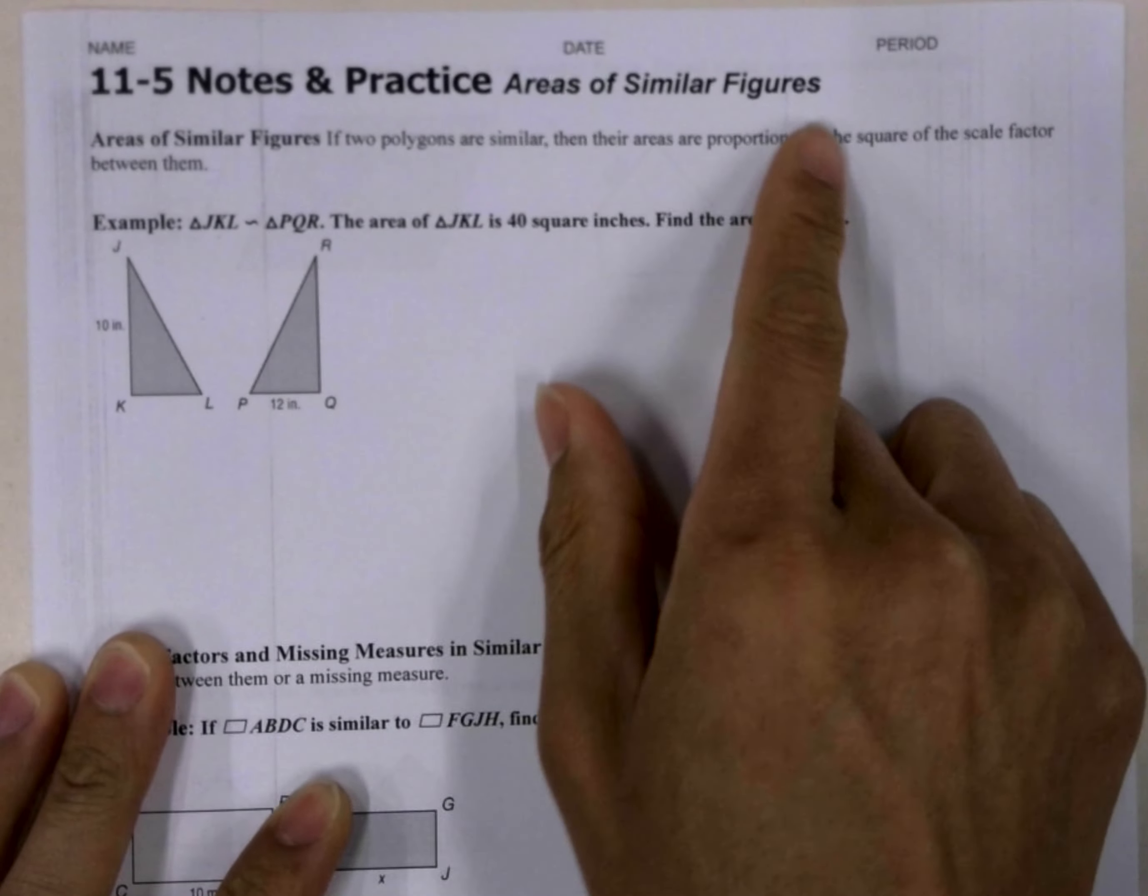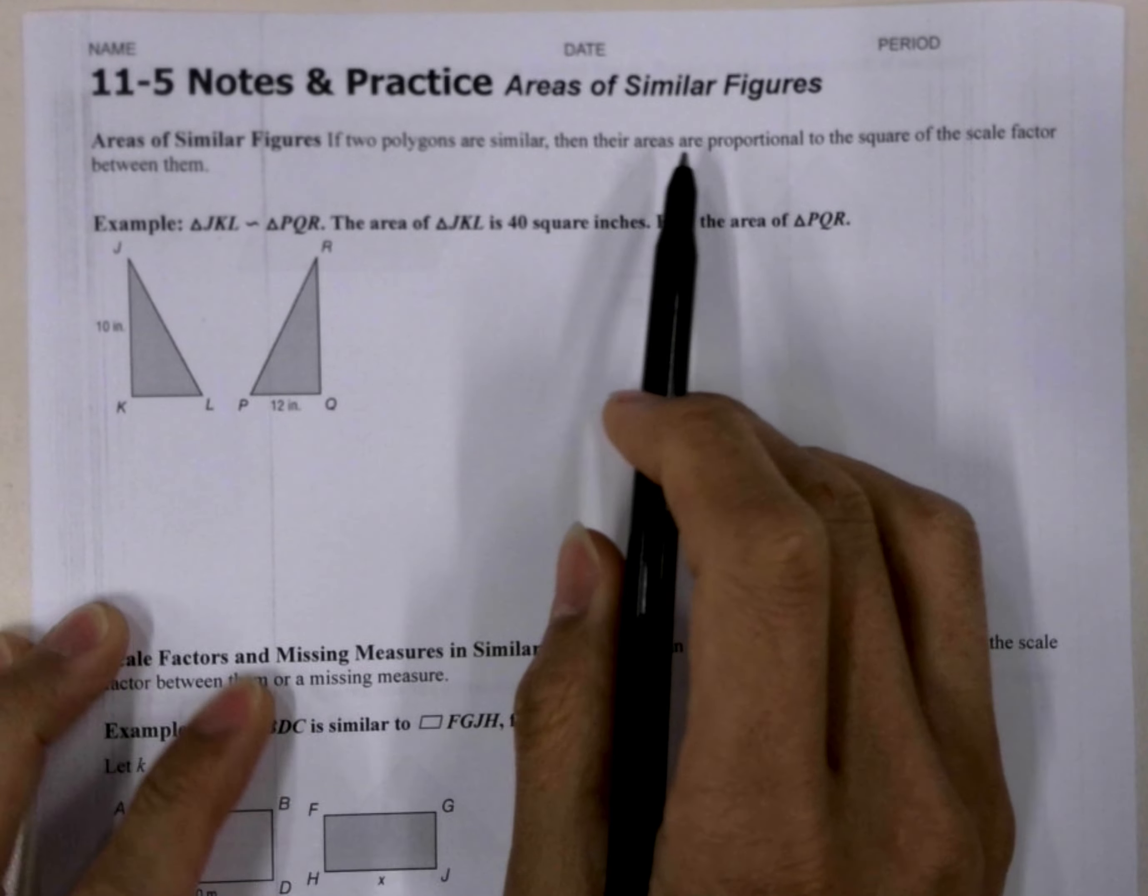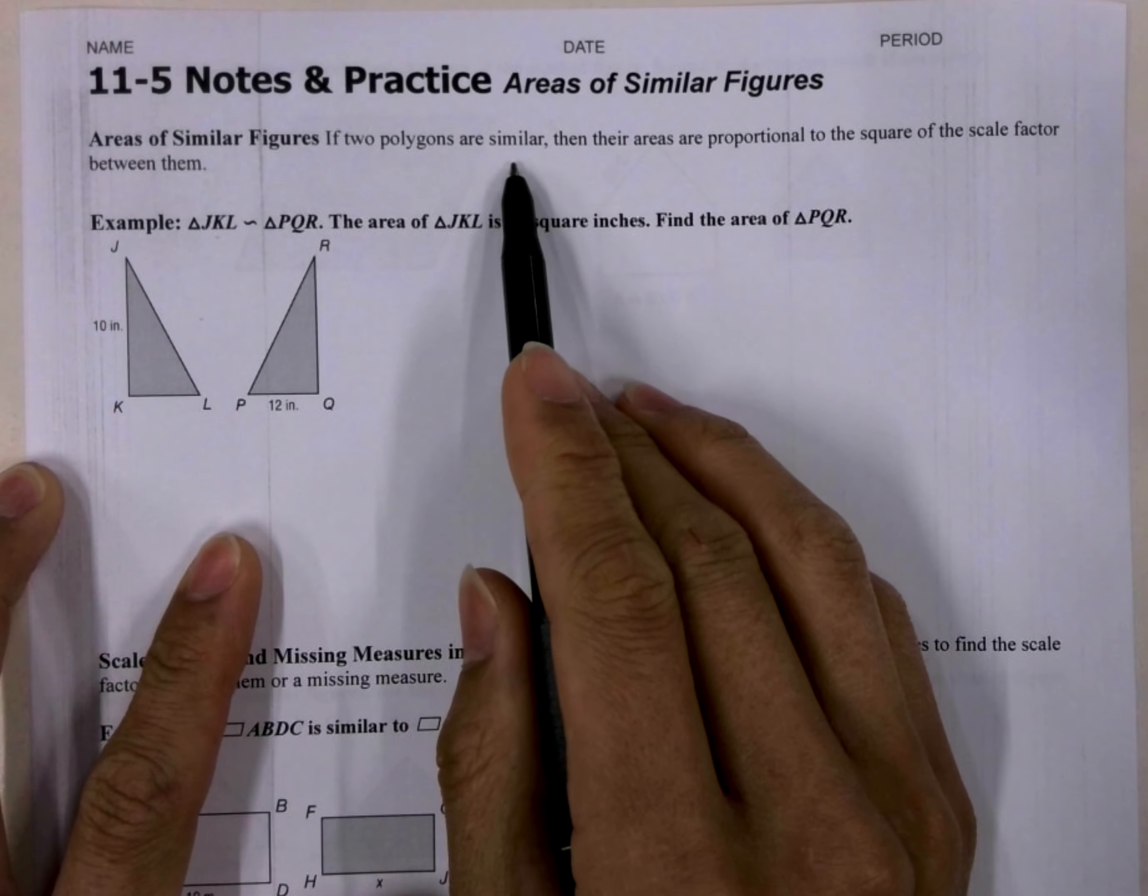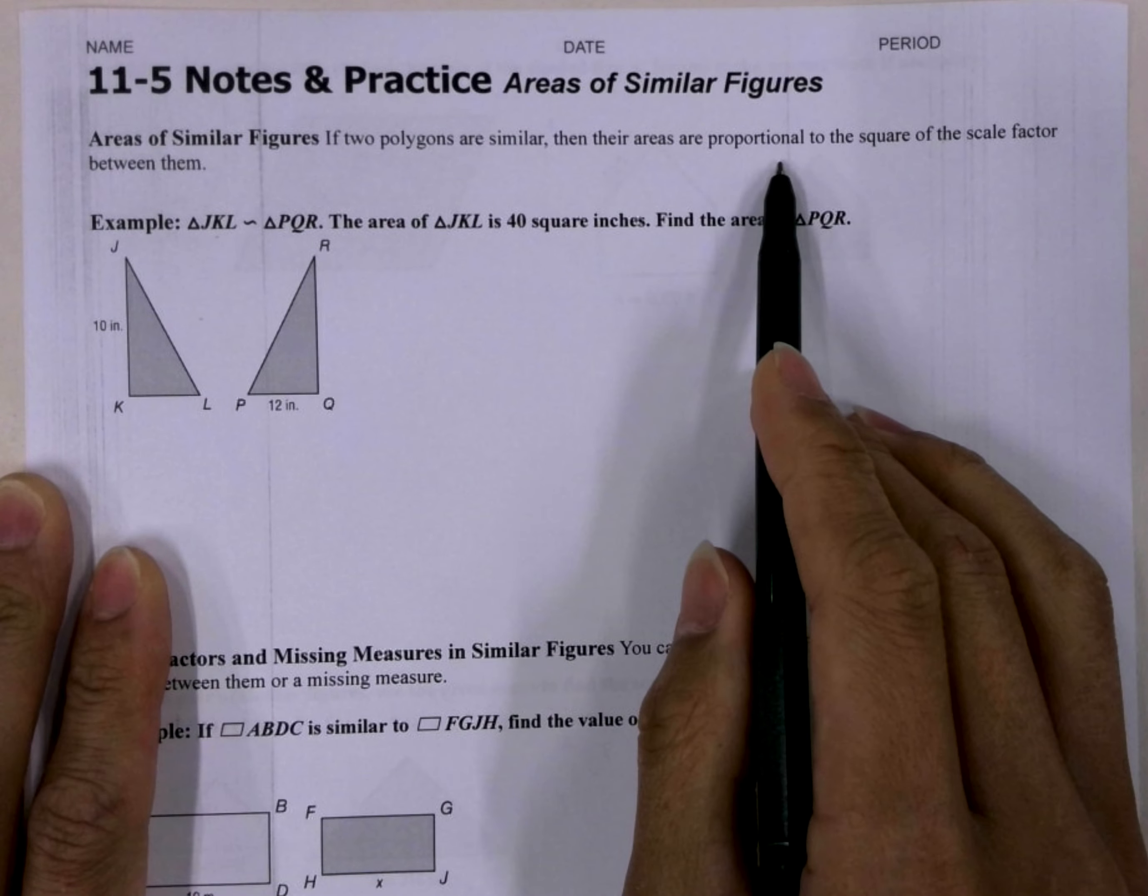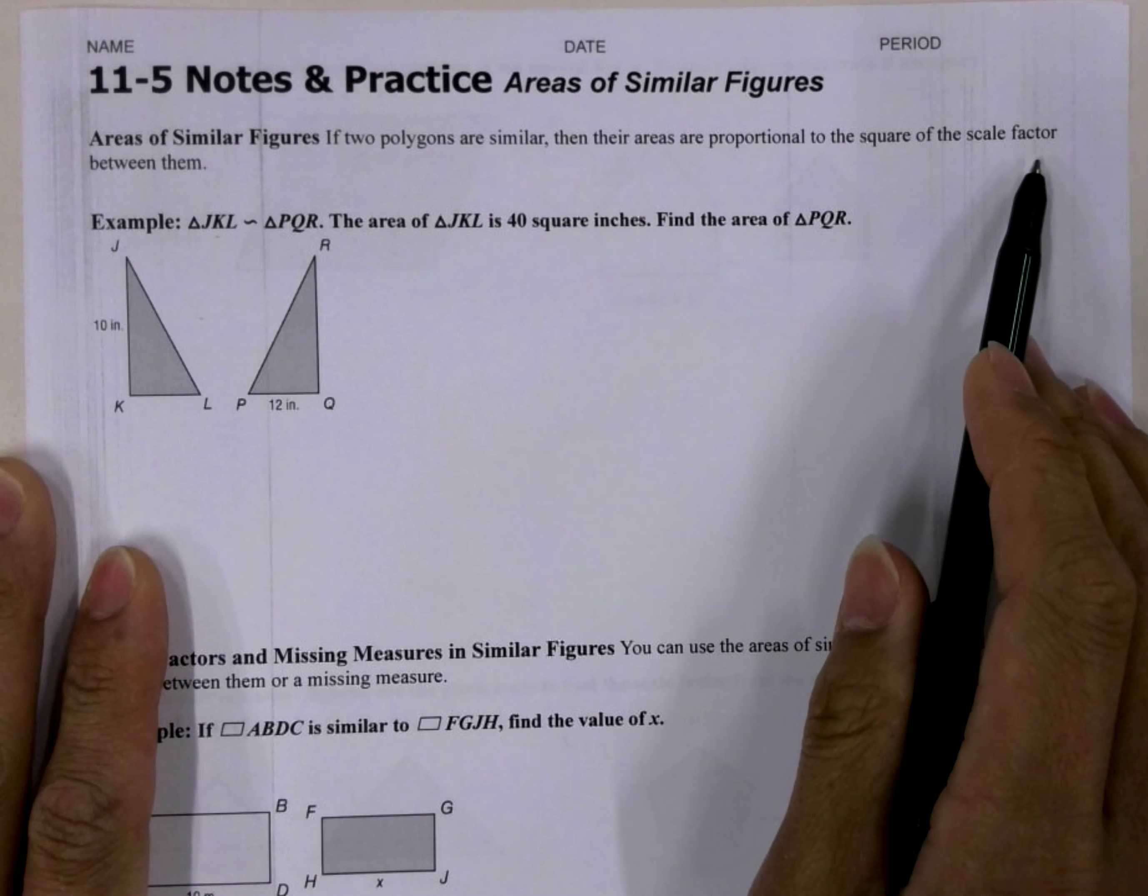The 11.5 area of similar figures. If two polygons are similar, then their areas are proportional to the square of the scale factor between them.